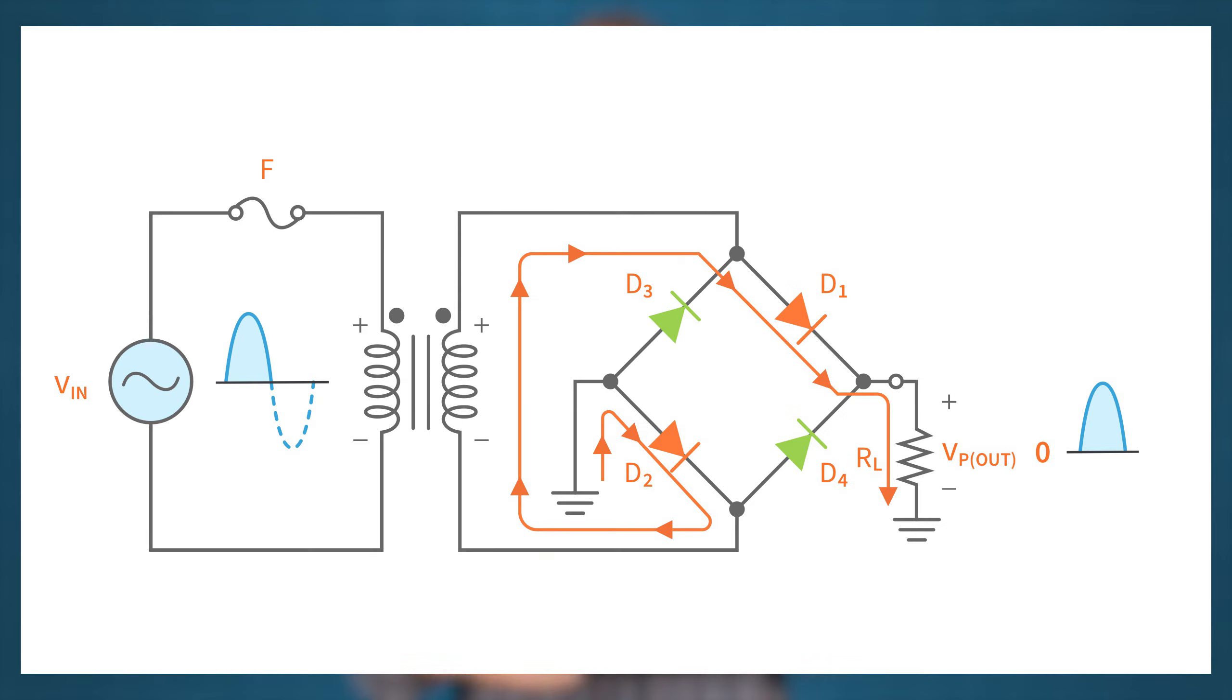Here's how the bridge rectifier operates. During the positive half-cycle of the input, diode D1 and D2 are forward biased while D3 and D4 are reverse biased. The current from the positive side of the transformer's secondary winding flows through D1 and enters the load, developing a voltage across the load. From the load, the current enters D2 through the ground and returns to the negative side of the secondary winding.